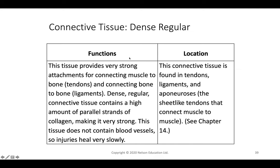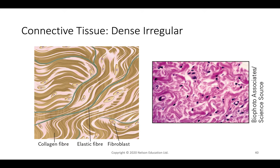Dense regular tissue forms strong attachments for connecting muscle to bone and bone to bone, coordinating body motion when nerve impulses fire muscles pulling on tendons and ligaments. It has many parallel strands providing great strength in one direction. Being avascular, injuries heal very slowly compared to more vascular tissues like muscle.